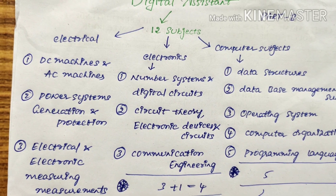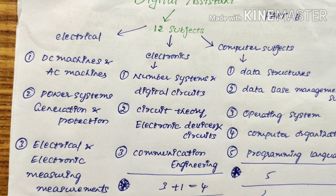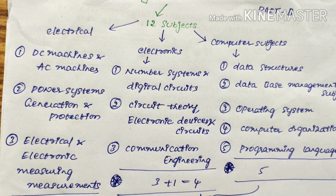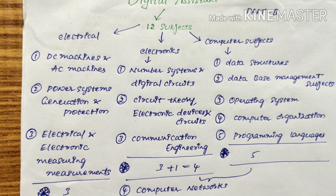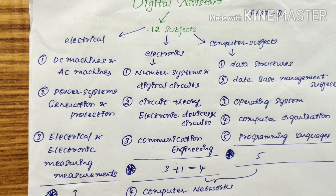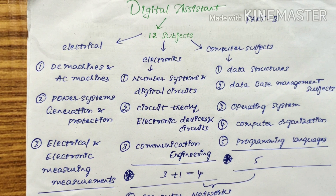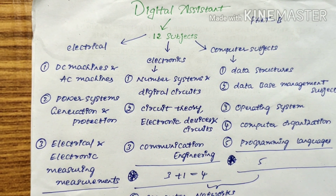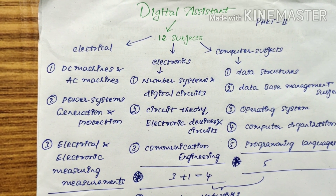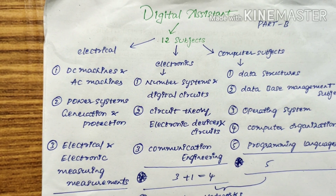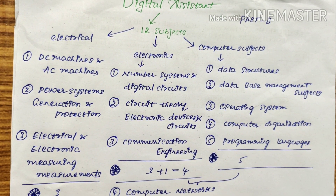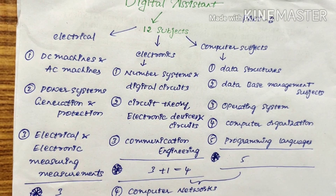For Operating System, we have to focus on types of operating systems, functions of the operating system, process management, memory management, contiguous and non-contiguous allocation, and fragmentation. For Computer Organization, we have to focus on types of memories like RAM, ROM, external memory, internal memory, modes of input/output data transfer, and interrupt-driven I/O.